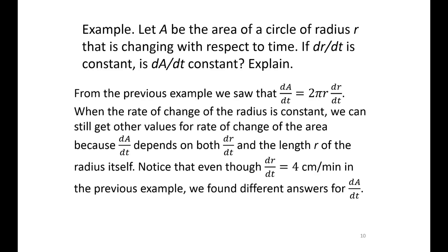Let A be the area of a circle of radius r changing with respect to time. If dr/dt is constant, will dA/dt be constant? We saw that dA/dt equals 2πr times dr/dt. Even when dr/dt is constant, dA/dt still depends on the length of the radius itself, so it is not constant. Notice that even though dr/dt was 4 centimeters per minute in both cases, the answers for dA/dt were different because they also depended on the value of r.